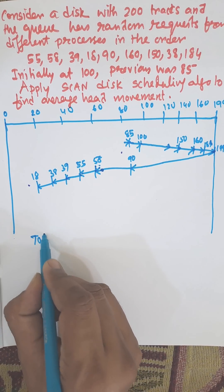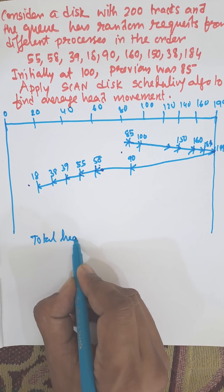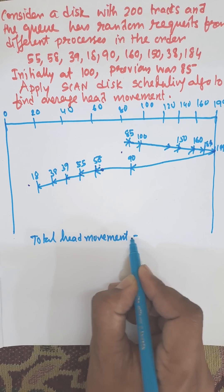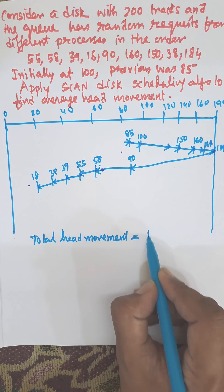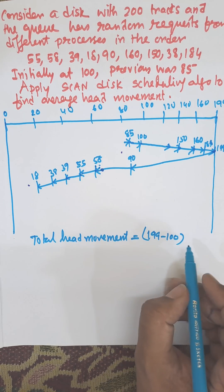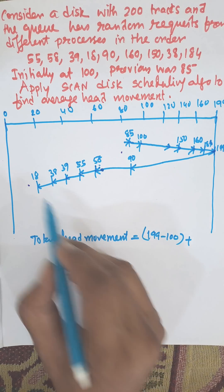Total head movement equals 199 minus 100 (as it's moving in the same direction) plus 199 minus 18.